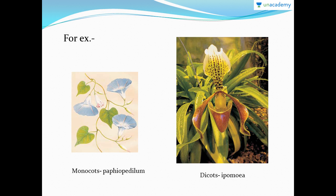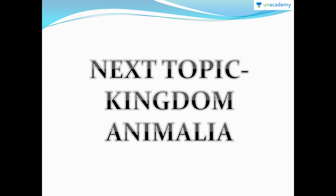For examples, the monocot example is Paphiopedilum and the dicot example is Ipomoea — there could be other examples too, but these are the ones given in the NCERT. Next, we will be dealing with Kingdom Animalia — we will finally be starting Kingdom Animalia.